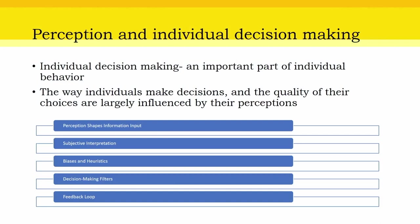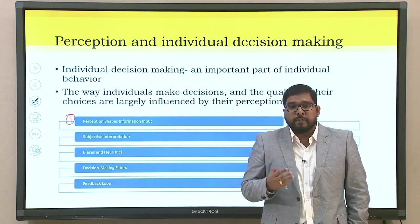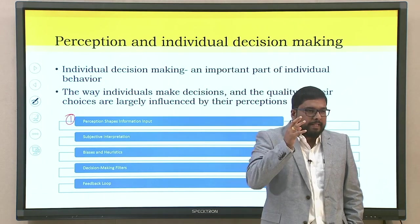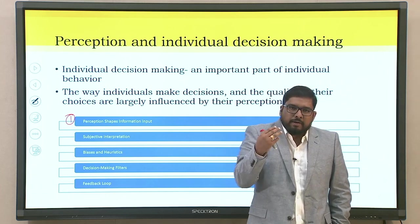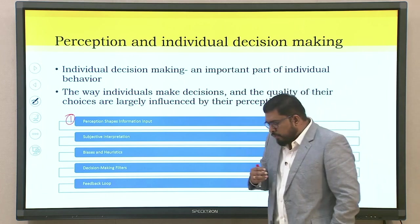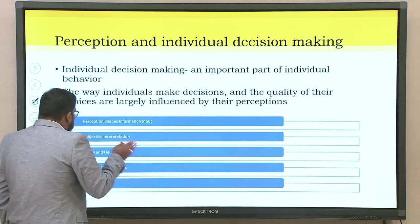We look into individual decision making as a critical part of individual behavior. The way individuals make decisions and the quality of their choices are largely influenced by perception — specifically, perception shapes information input. If you have gone through the previous lecture you would understand the different ways in which perception shapes information input. You may already have made a perception about a particular individual, so whatever information you receive you may tend to be dismissive, or you may seek more information to give that individual a second chance.